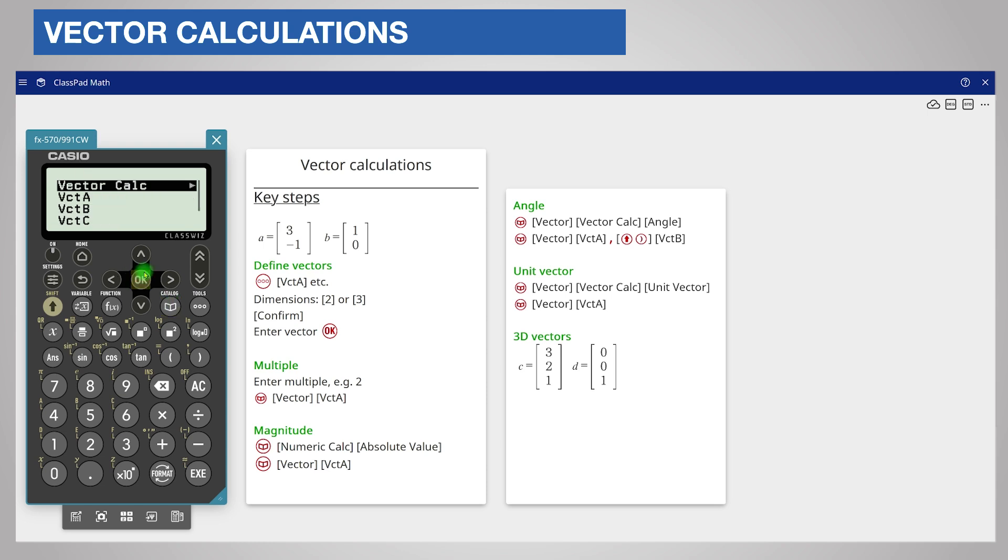From vector, notice I can use the page scroll key to find vector D a little more quickly. Remember to close the bracket and press the execute key. The angle is 74.5 degrees to three significant figures.